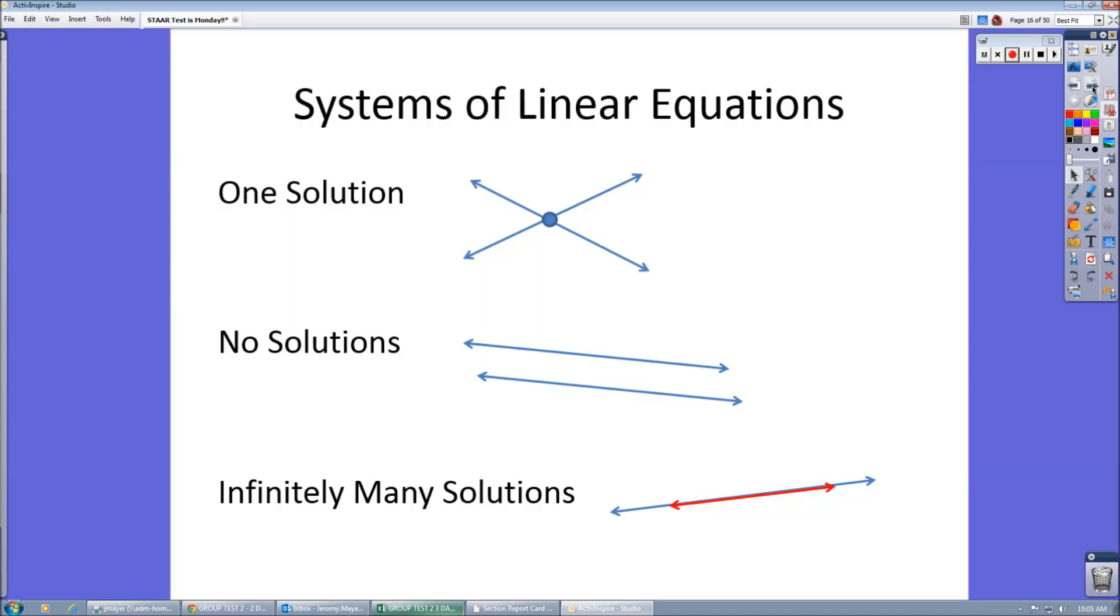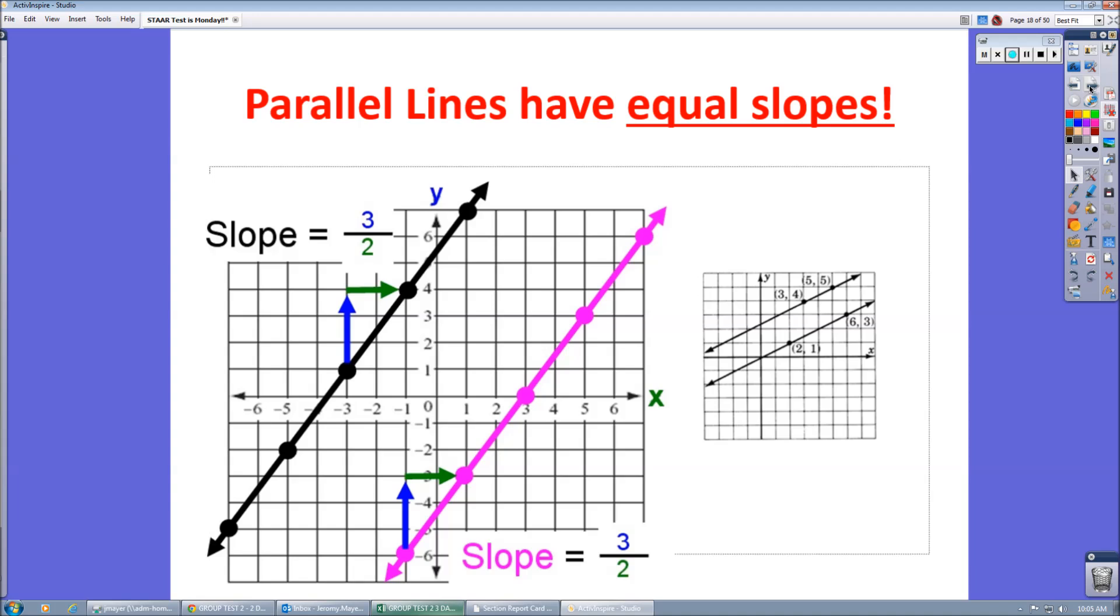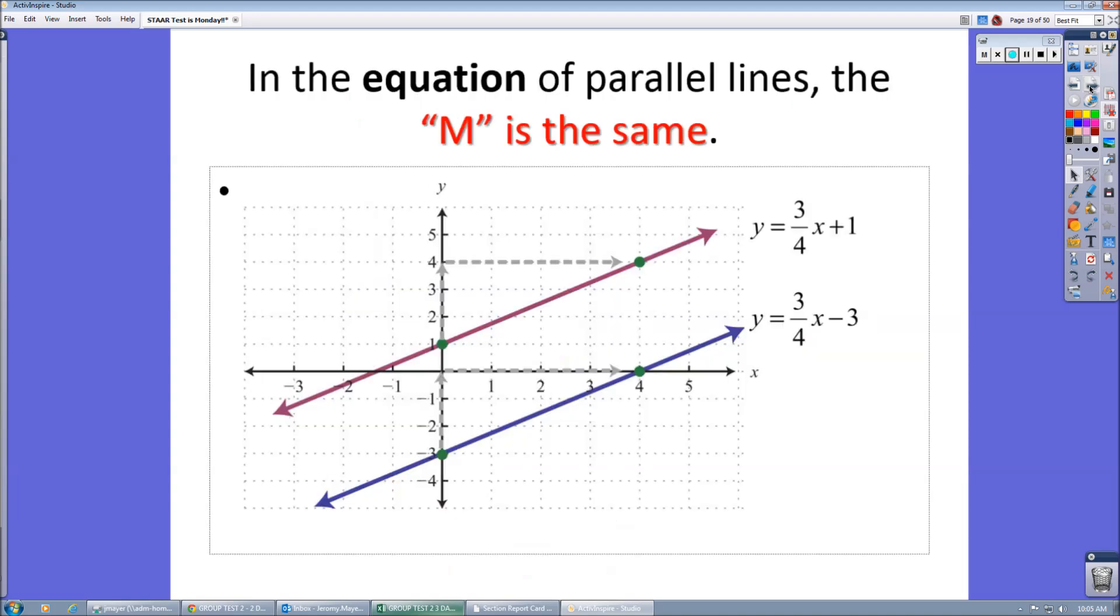Systems of linear equations. There's one solution, no solutions, or infinitely many solutions. Parallel lines have equal slopes. The slopes will be the same. So let's check out two equations here that have the same slopes. You'll notice that the y-intercepts are different, but the slopes are the same, making them parallel. They'll never cross each other.